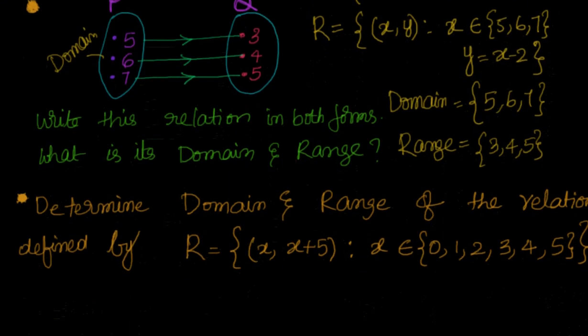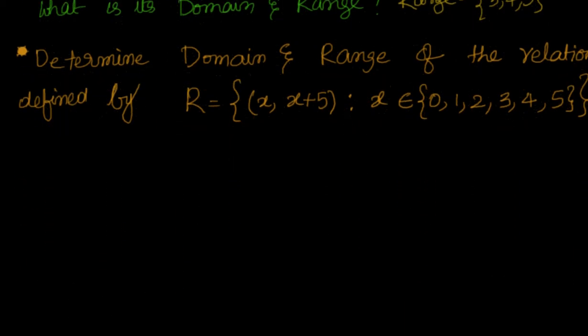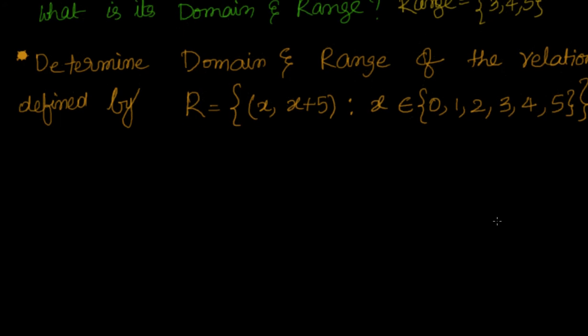That's about it. Let's move to the next one. Determine domain and range of the relation defined by (x, x+5), x belongs to {0, 1, 2, 3, 4, 5}. Let's try to draw this first so that it's very easy.